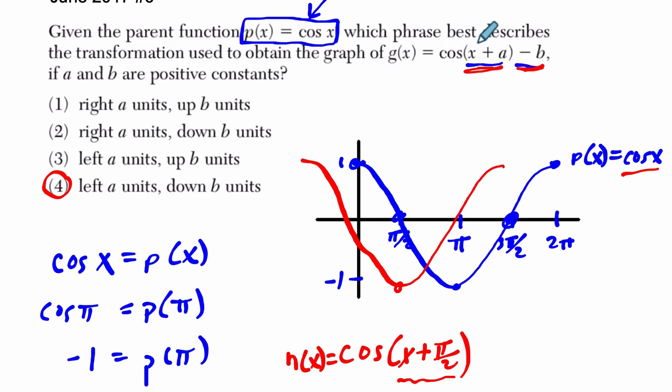If you subtract from your input, if you subtract a positive, it's going to go to the right. And then if you add here to the output, the graph would move up. Hope that helped.